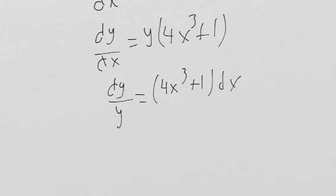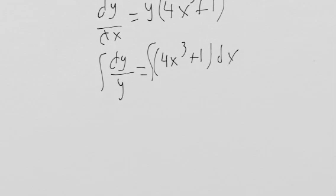So we want to integrate both sides now. Ultimately we want to solve for y here. So the integral of 1 over y dy is just natural log absolute value y, and that is equal to x to the 4th plus x plus c.